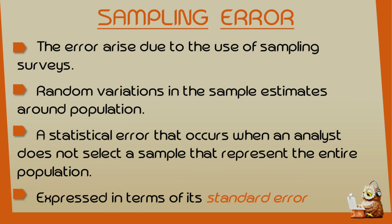This is the sampling error. This error is due to the use of sampling surveys. It refers to random variations in the sample estimates around the population. A statistical error that occurs when an analyst does not select a sample that represents the entire population.